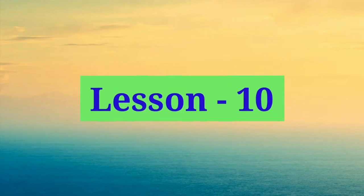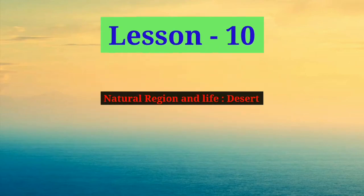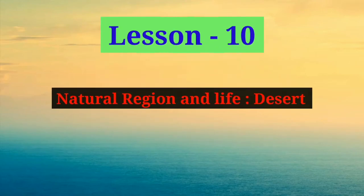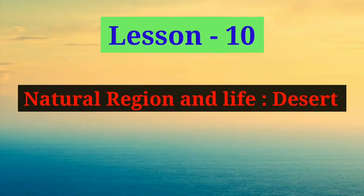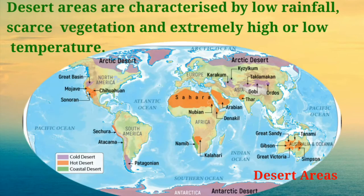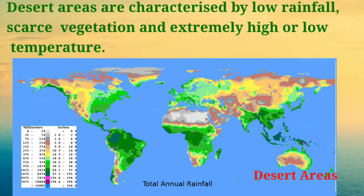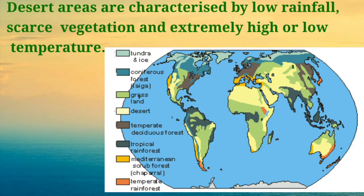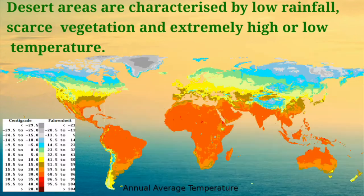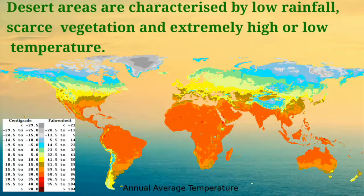Let us go through the key points of the lesson: natural region and life in desert. Desert areas are characterized by low rainfall, scarce vegetation, and extremely high or low temperature.